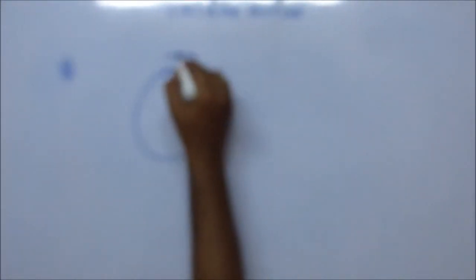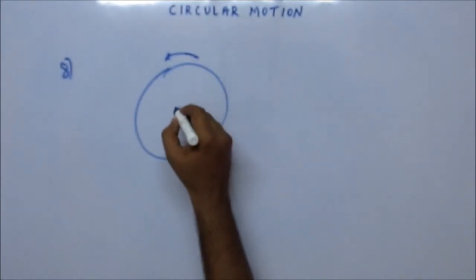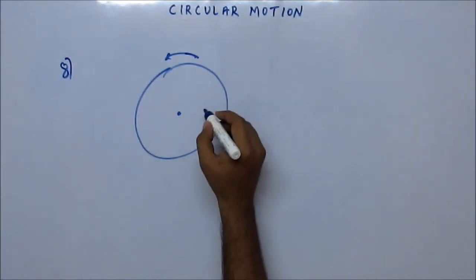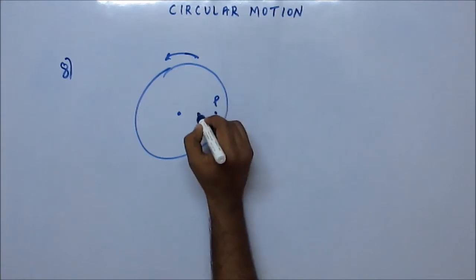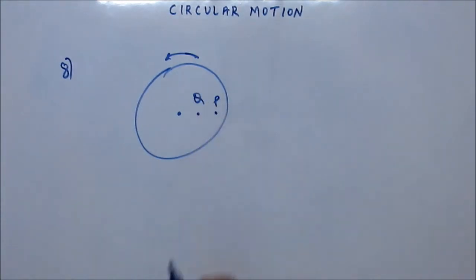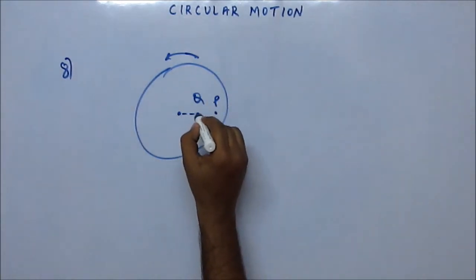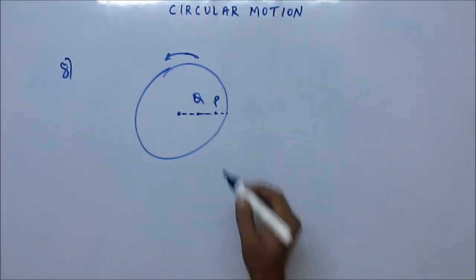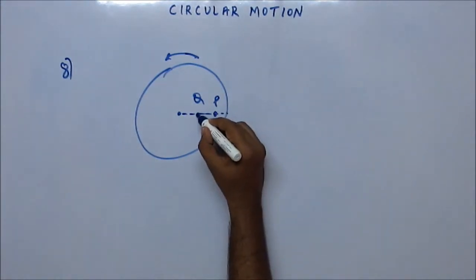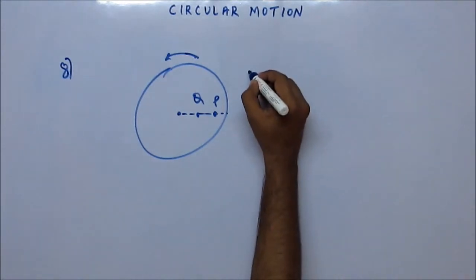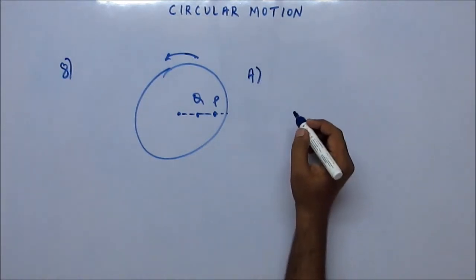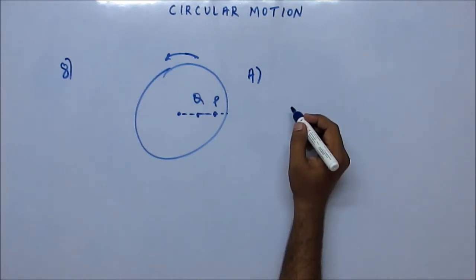Suppose there is a disc and it is rotating. There is a center, a point P, and a point Q on the same line. Q is also on the disk. Now regarding P and Q, I am giving you four options — tell me which of the following can be correct.